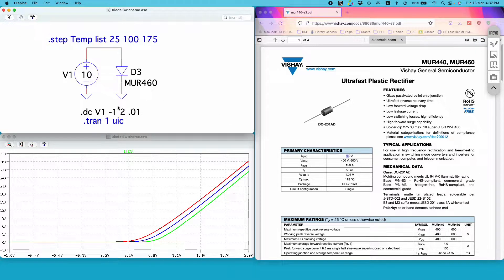To plot the characteristics of the diode I am performing a DC sweep on this voltage source, sweeping V1 from minus 1 volt to 2 volts in increments of 0.01 volt through this command.